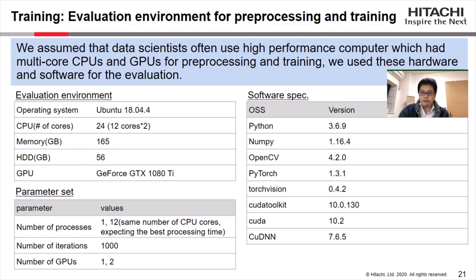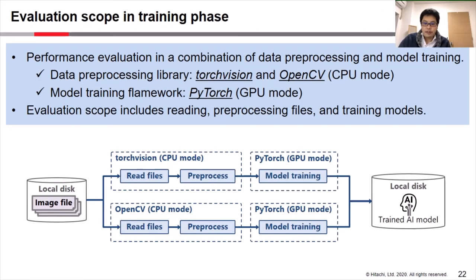This figure shows the evaluation scope in the training phase. We compared the performance in a combination of data preprocessing and model training. In data preprocessing, we used TorchVision and OpenCV in CPU mode. For model training, we adopted PyTorch in GPU mode. Our evaluation scope includes reading files, preprocessing images, and training models.